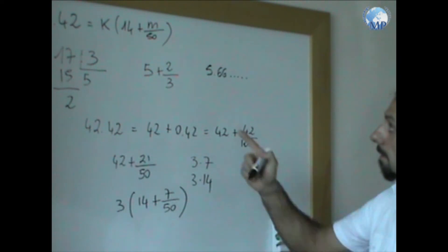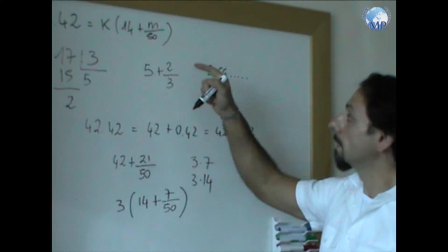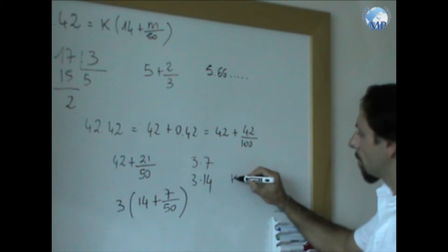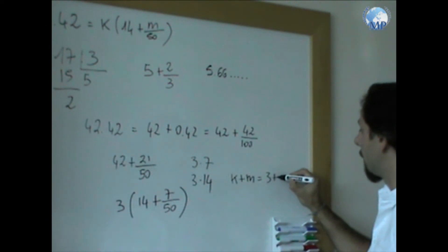At this point, it's clear that k equals 3 and m equals 7. So to answer the original question, k plus m equals 3 plus 7 equals 10.